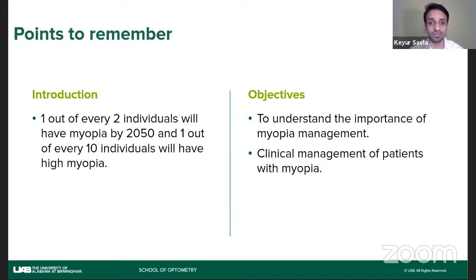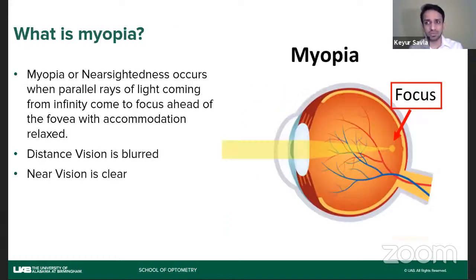The objective of this talk is to understand the importance of myopia management primarily, which will also help you tell your patients about its importance, as the awareness is still not where it should be. At the same time, it will help you understand clinical management of patients with myopia. Myopia, as we all know, is also known as nearsightedness. It occurs when parallel rays of light coming from infinity form a focus in front of the retina or fovea, with accommodation relaxed. Clinically, the two key signs are blurred distance vision and clear near vision.